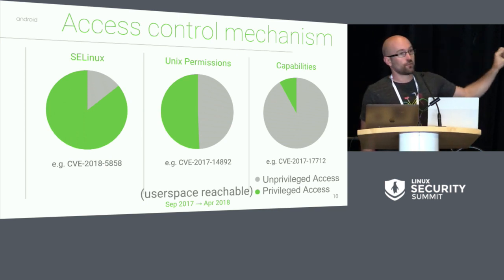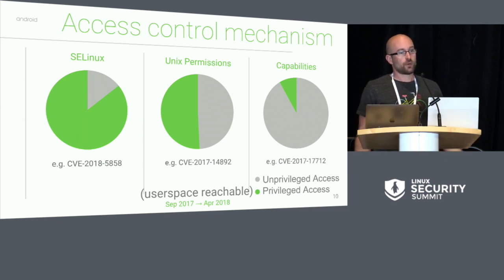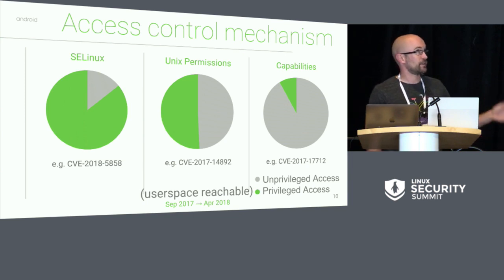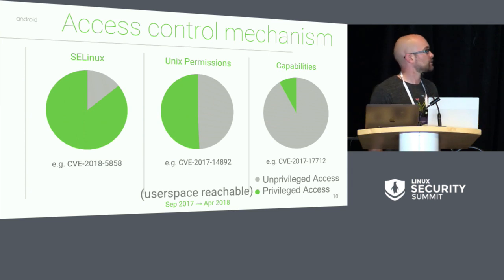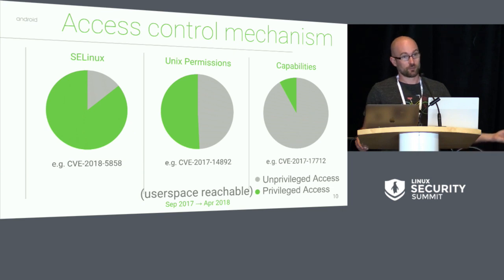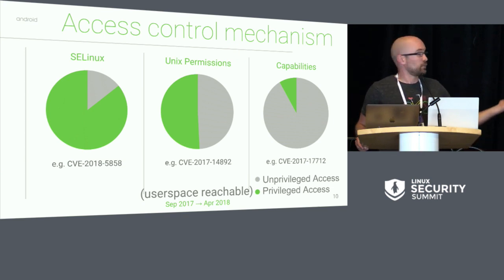I wrote down an example for each one of these that you can look up if you want. For SE Linux, this one was a debugFS node which you could exploit with a buffer overwrite. For Unix permissions, it was a /dev/sound node — an audio driver bug that required the correct Unix permissions and the correct SE Linux permissions. For capabilities, on Android untrusted processes can create raw sockets, so in order to reach this bug you had to be able to create a raw socket and you needed CAP_NET_RAW, which an unprivileged process may not have.